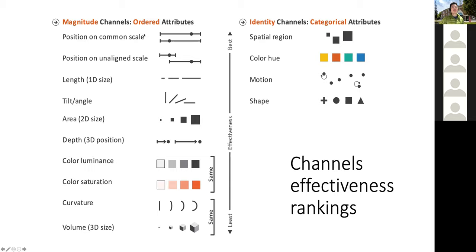For quantitative or numerical attributes, position on a common scale — where you have the same starting point and the length represents the same scale — is the most effective channel. You can also have unaligned scales where the start point is not the same, which is still very good. Other options include length, tilt, angle, and area, but these are closer to the bottom of the list, meaning they are not very effective.